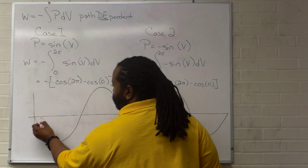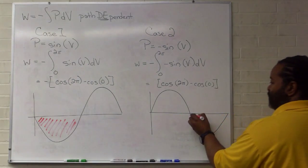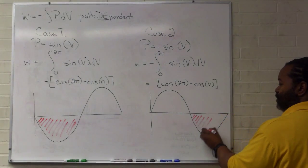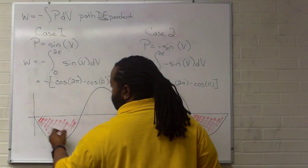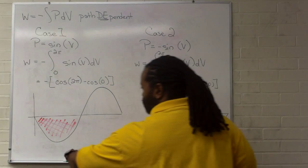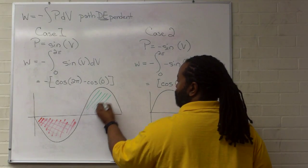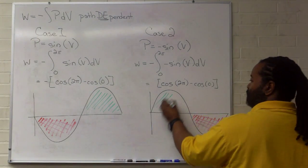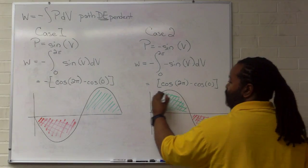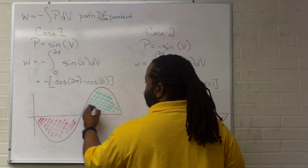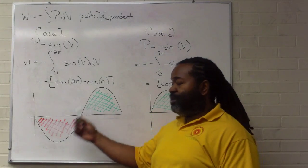So if we're using our area under the curve reasoning, this area in case one corresponds to this area in case two. And using green to highlight, this area corresponds to this area. Comparing across two cases, it's straightforward to say yes, we will get the same numerical value. We can understand where the zero comes from because these two areas are equal.